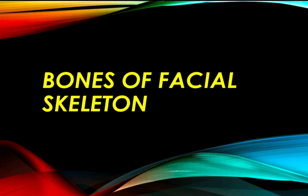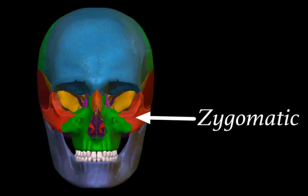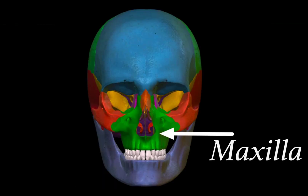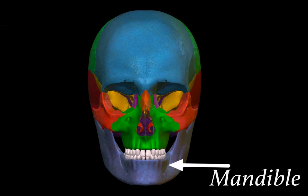Moving on to the bones of the facial skeleton — the zygomatic bone, also known as the cheekbone, is one of them. Medially to the zygomatic bone lies the maxilla. Both the maxilla and zygomatic bone are paired bones. Inferiorly lies the mandible, which forms the lower jaw and helps in mastication.